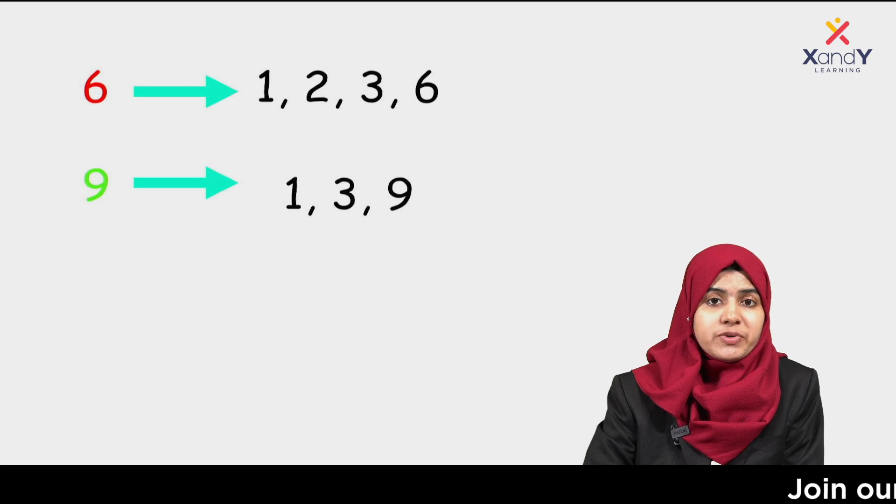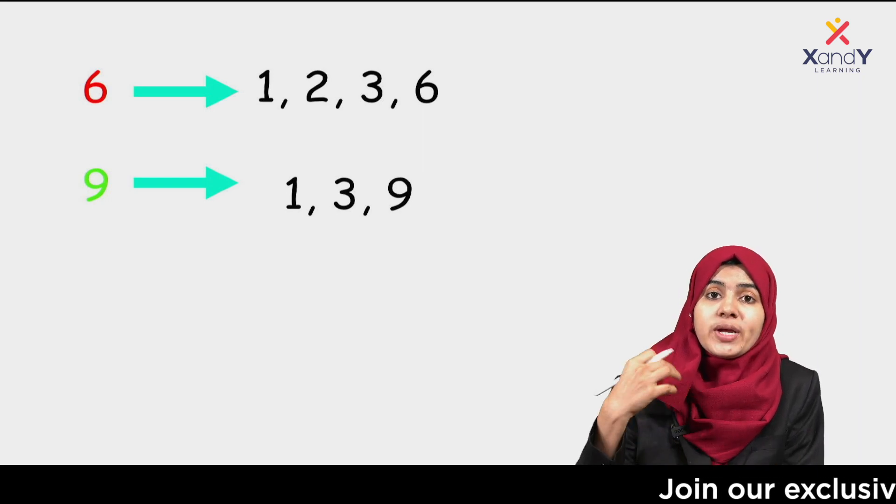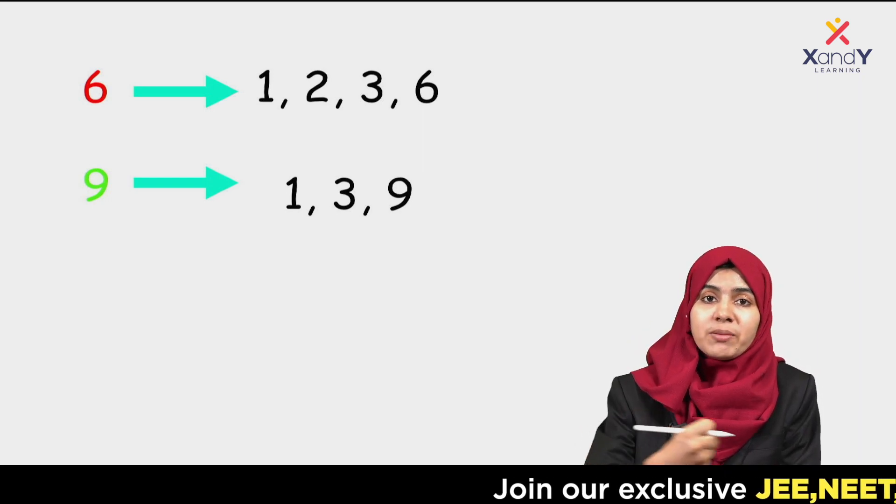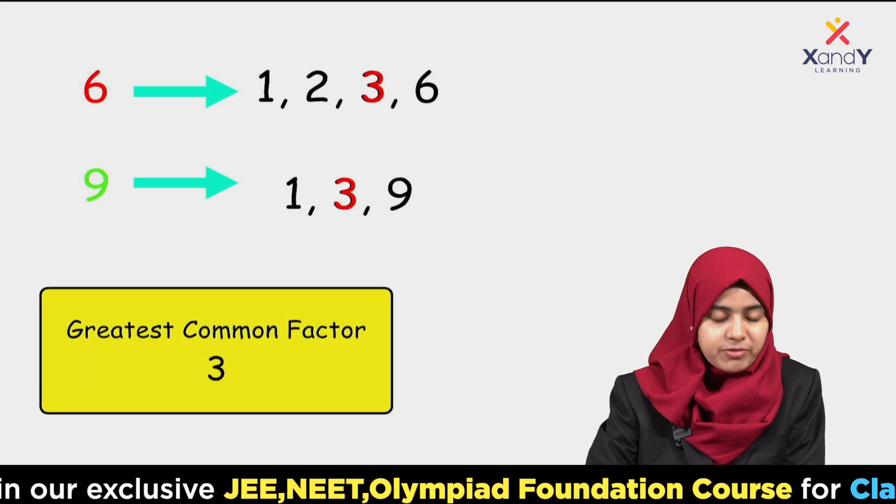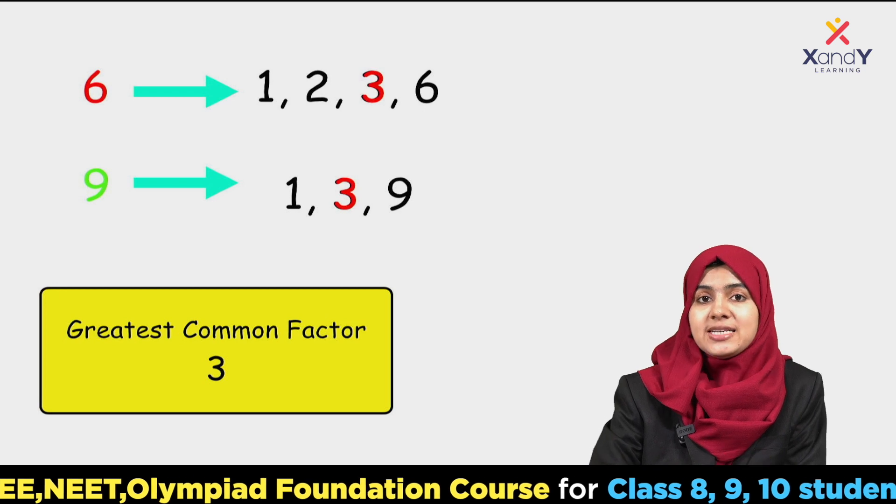So if you look at the highest common factor, the highest, the greatest, the largest whole number is 3. So 3 is the greatest common factor of 6 and 9.